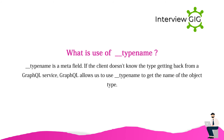What is the use of __typename? __typename is a meta field. If the client doesn't know the type being returned from a GraphQL service, GraphQL allows us to use __typename to get the name of the object type.